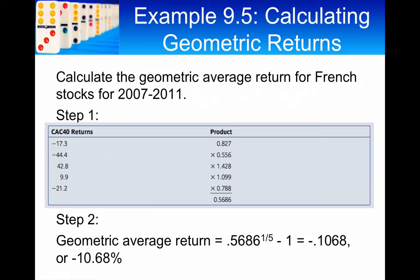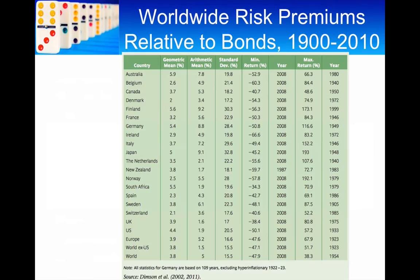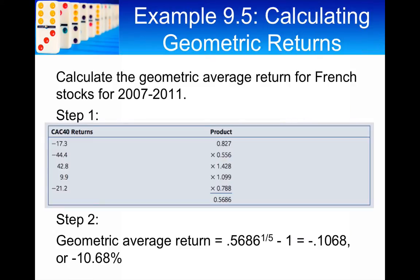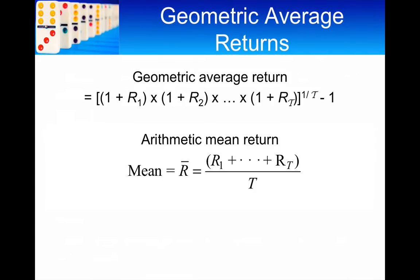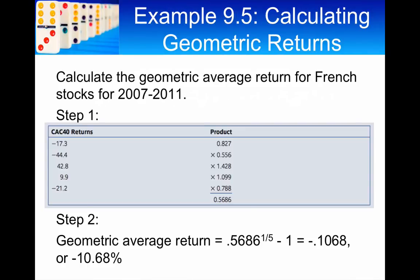So, on average, over the full period, the French market lost about 10.68%. So, how would you calculate the arithmetic average return? Well, in this case, you're just adding each of these and then dividing by five. Simpler, but that doesn't incorporate the impact of compounding.